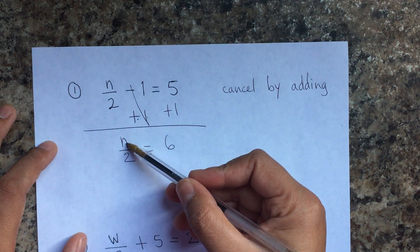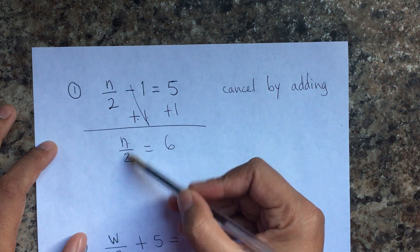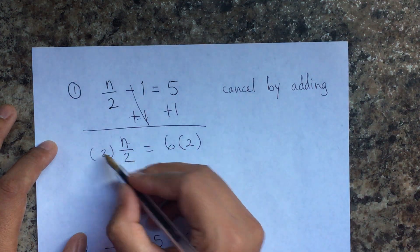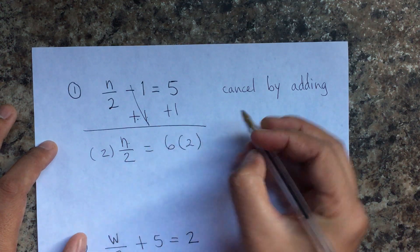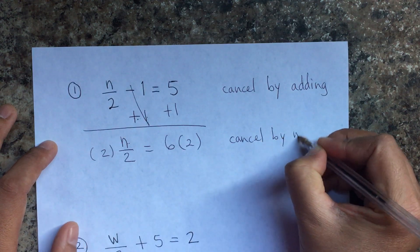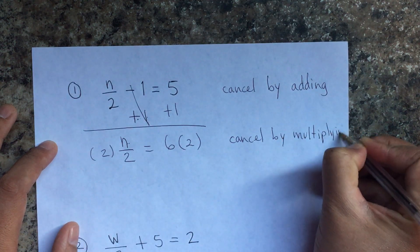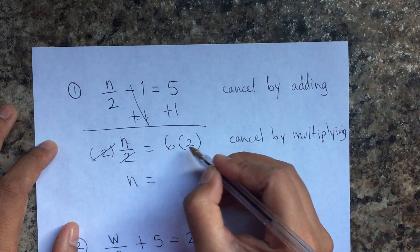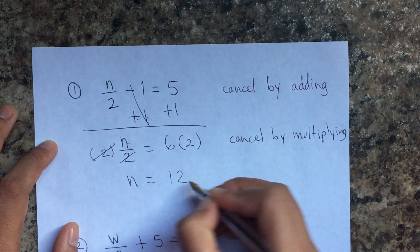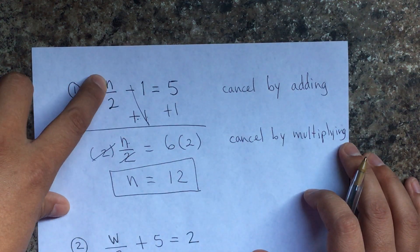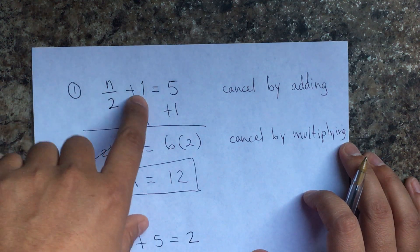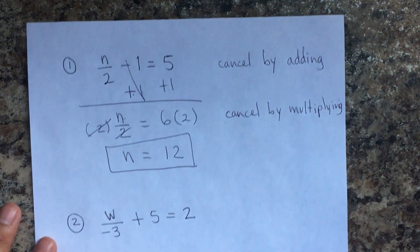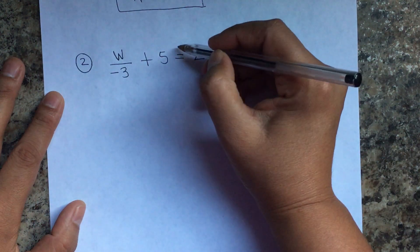This means: if I have a number and I divide it by two, the answer is six. So the opposite of dividing is multiplying. If I multiply on one side I multiply on the other to keep the equality — cancel by multiplying. This cancels and now on this side I only have n equals, and six times two is 12. Let's check: 12 divided by two is six, minus one is five. Yes, perfect.